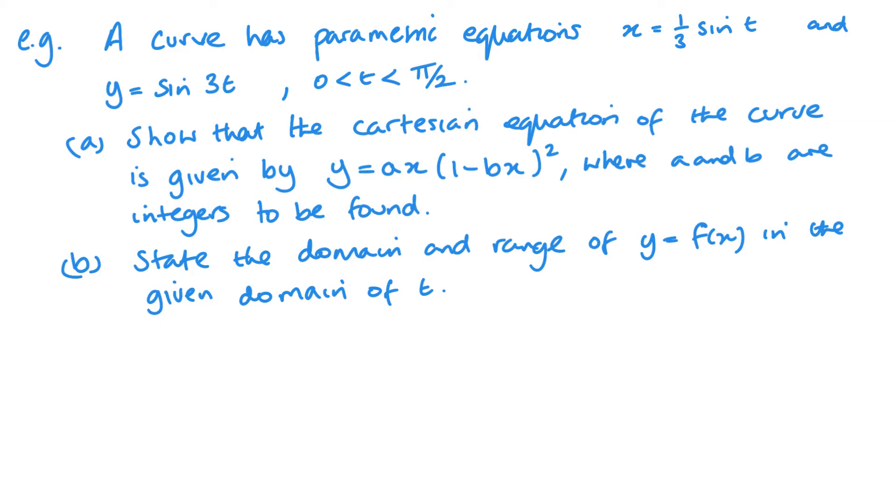We've got another set of parametric equations. This one has a single t. And this one has a 3t. We can't use our sine squared plus cos squared or anything like that to link these together. We need to, as we've got a 3t, we need to be thinking along the lines of a double angle formula. I'm just going to jump onto a clean page just to focus on part a. We need to show that the Cartesian equation can be written in this form.